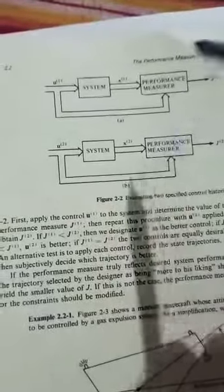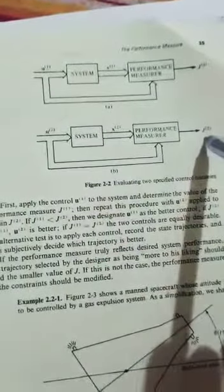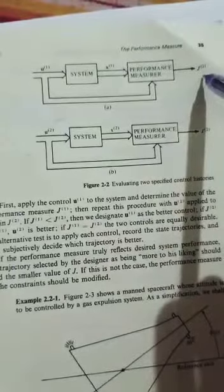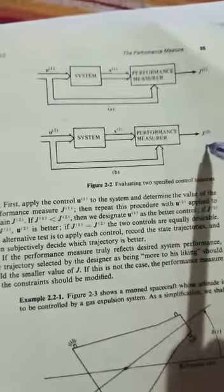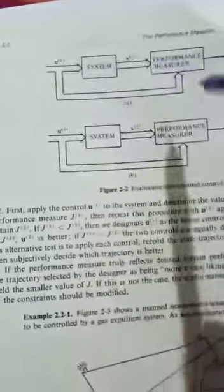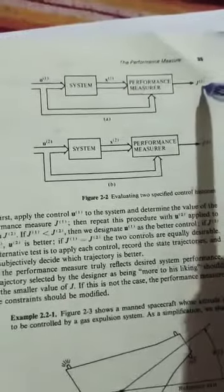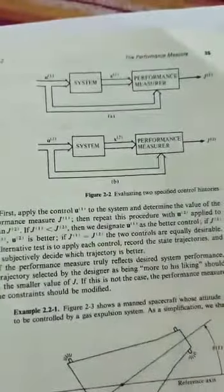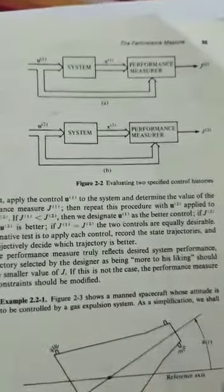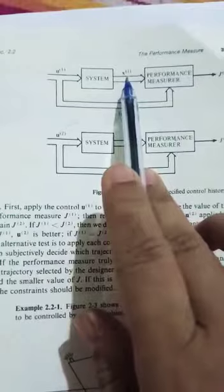In these two block diagrams, how do we select the better one? For the first input we get g1, for the second input we get g2. Out of these two performance measures, we select whichever is minimum. If g1 is less than g2, we select input u1. If g2 is less than g1, we select input u2.